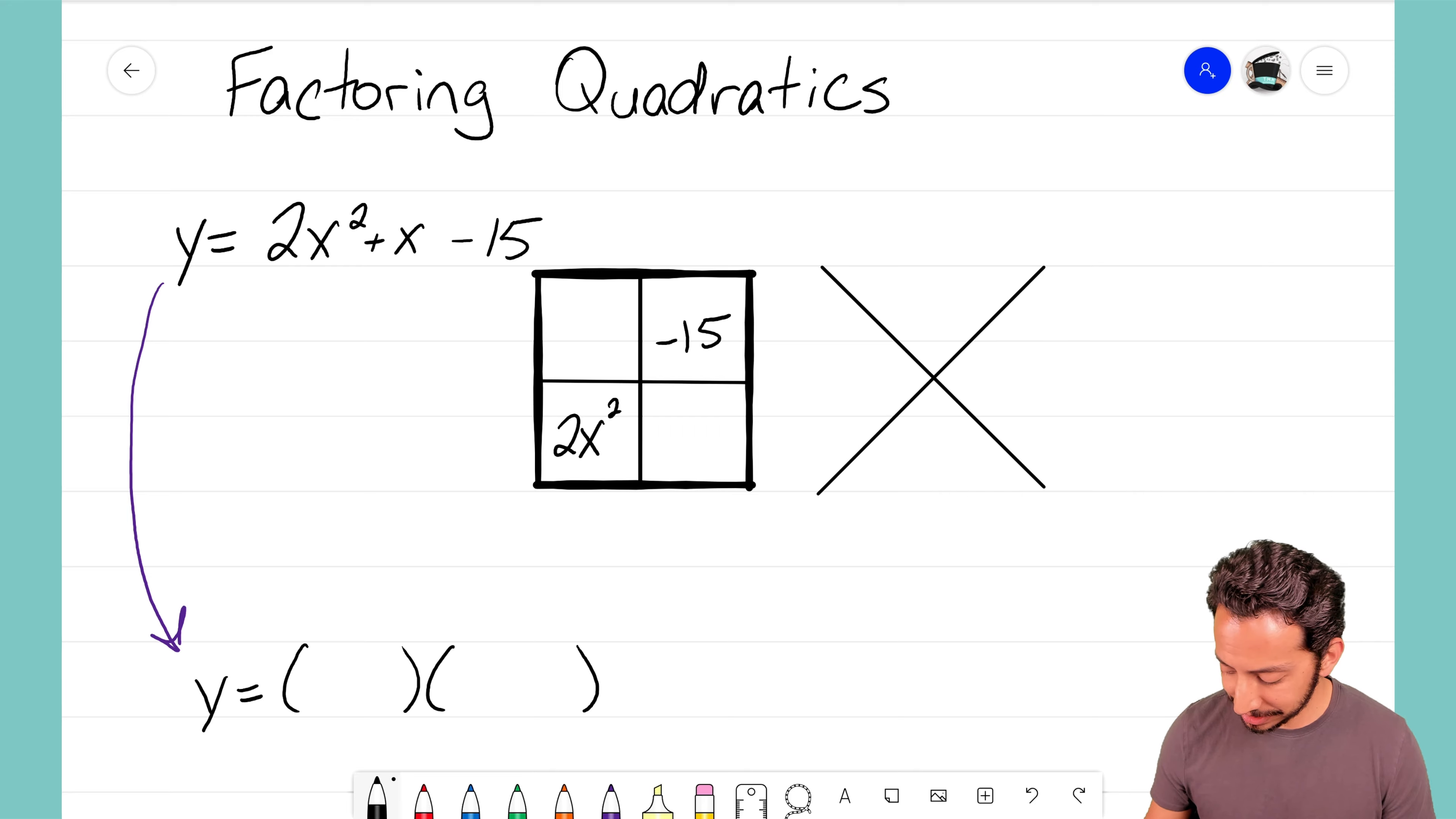I then take those two pieces that create this diagonal and I multiply them together so that I can create the top part of my diamond problem. Well 2x squared times negative 15 creates negative 30x squared. Now the reason why we do that is because we have one more term left here that we have not dealt with and that is a plus x.